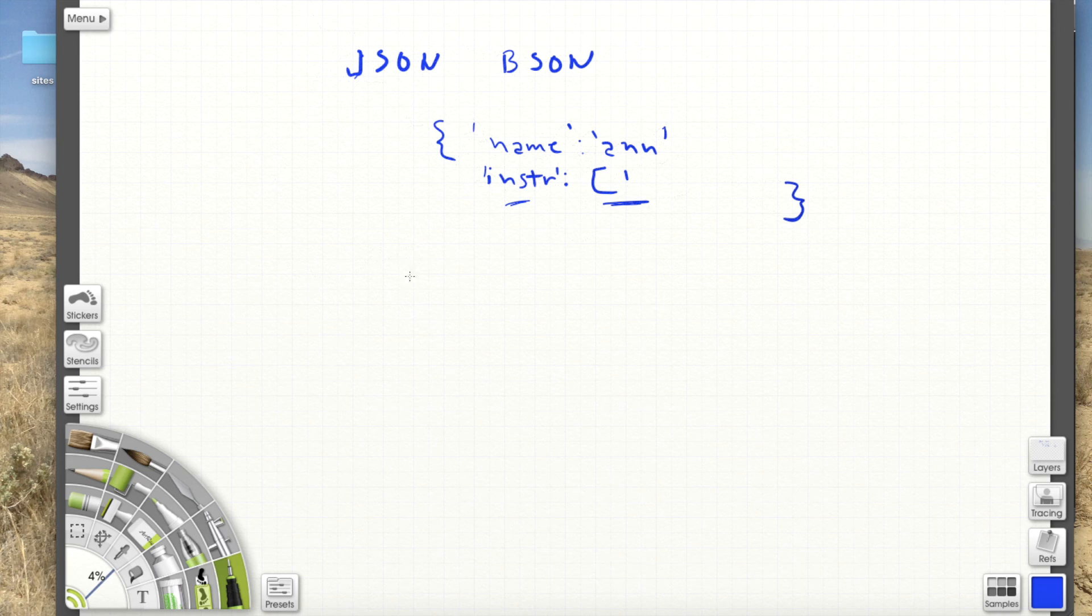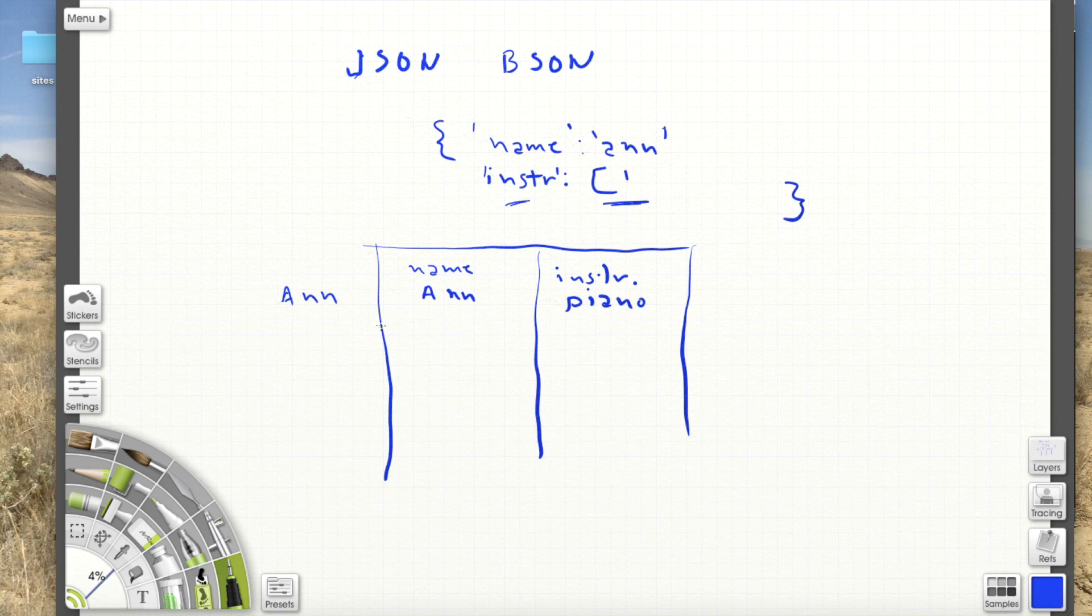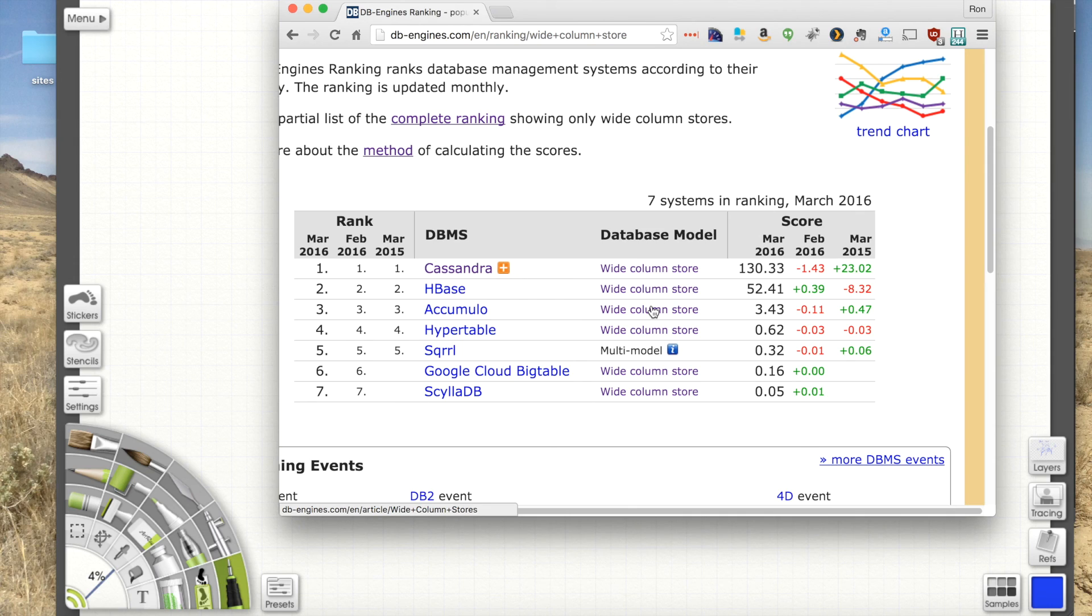And the third kind is what's called a wide column store. So it looks the most like an SQL database. We have this idea of columns. But the columns can change, the column names change per entry. So we can have Ann here. So her name, Ann. And this could be called instrument, piano. Next entry can be last name, Smith, Clara. So we have this idea of columns, but the columns change name whenever they need to. So here I had name and instrument, and now the columns changed from last name and first name. So that's the wide column store. And Cassandra is the most common wide column store. And that's the one we'll be looking at.